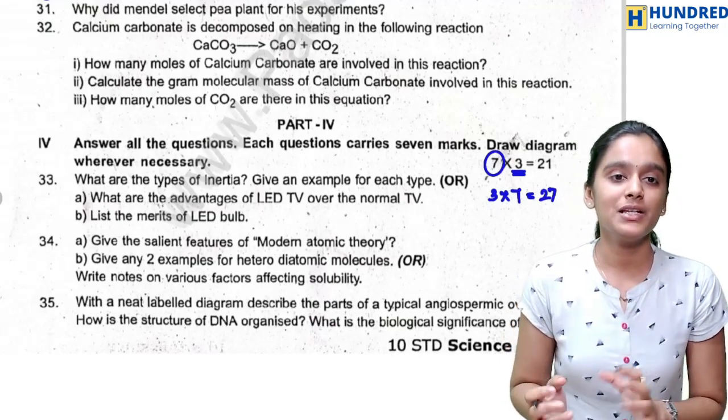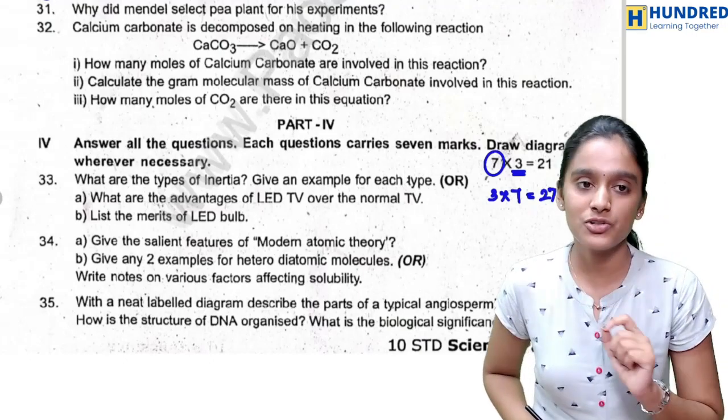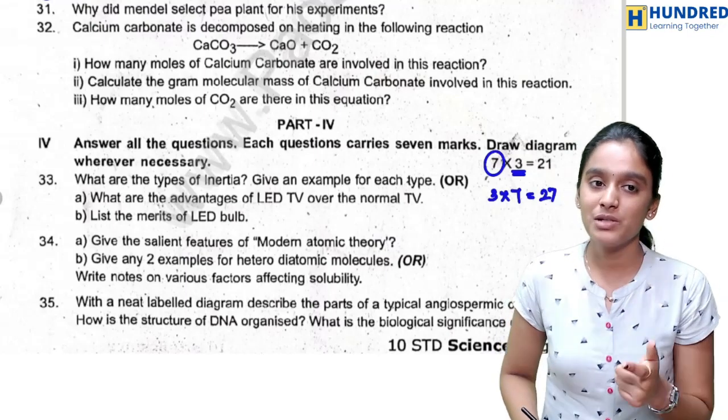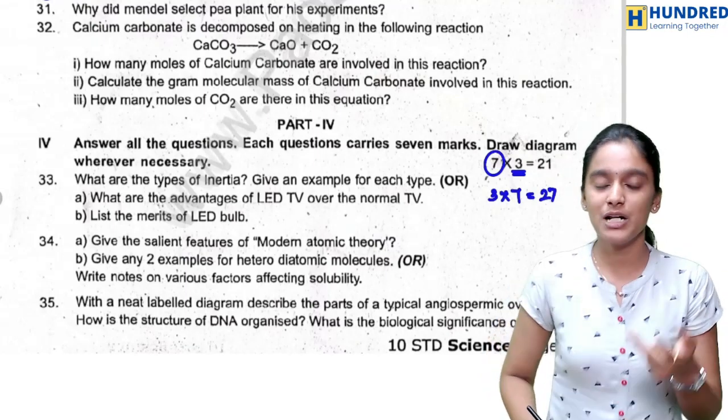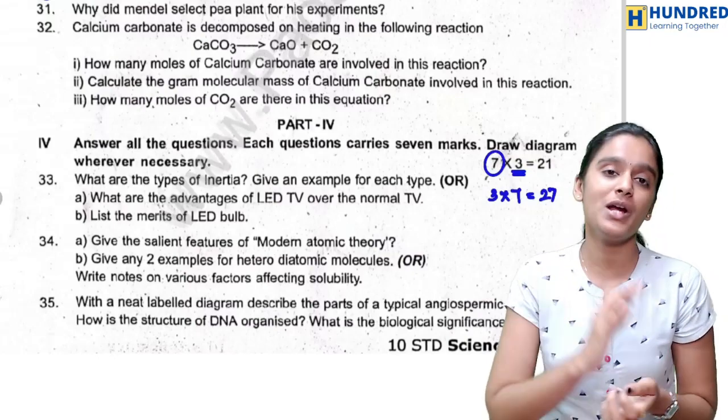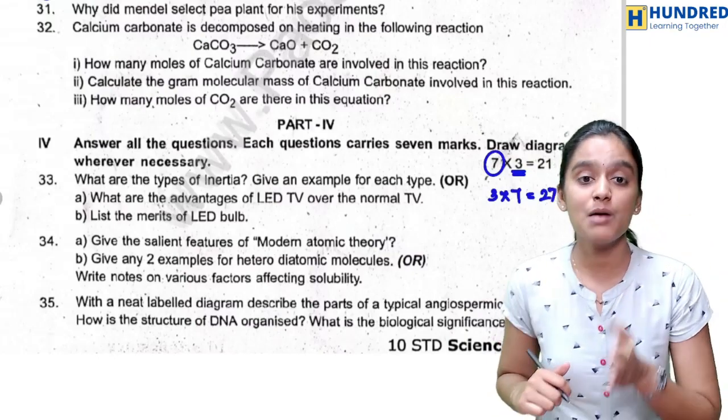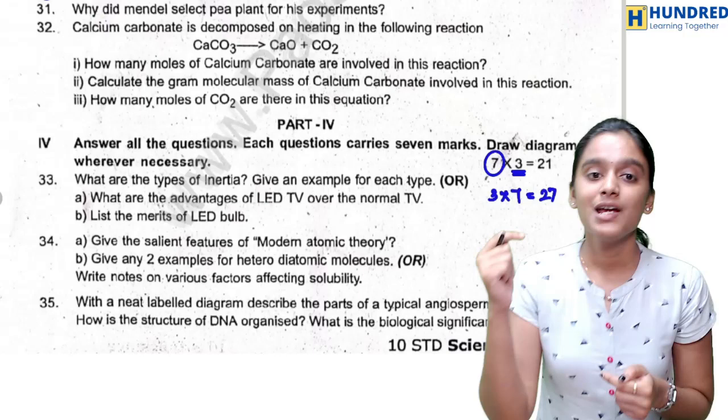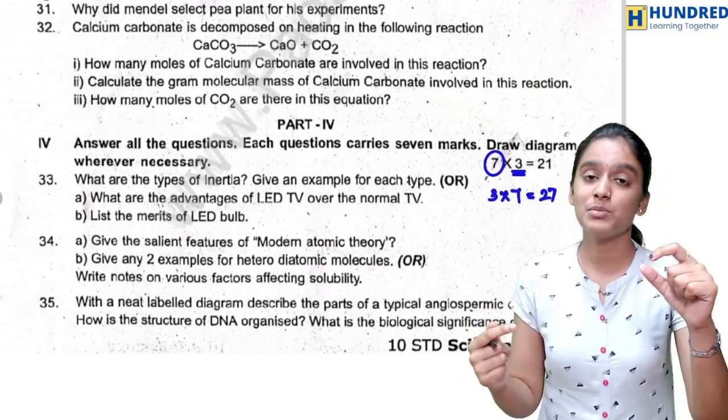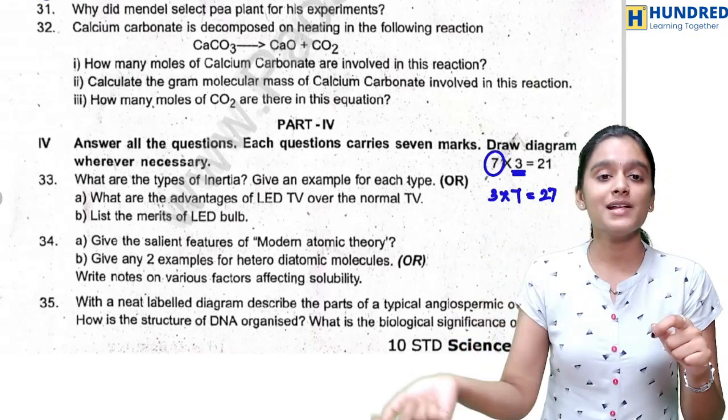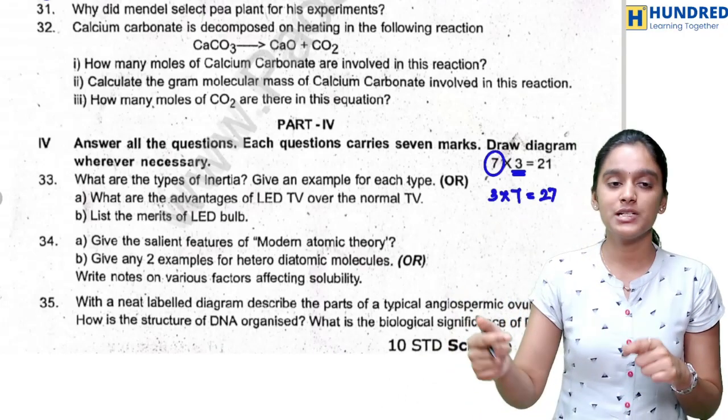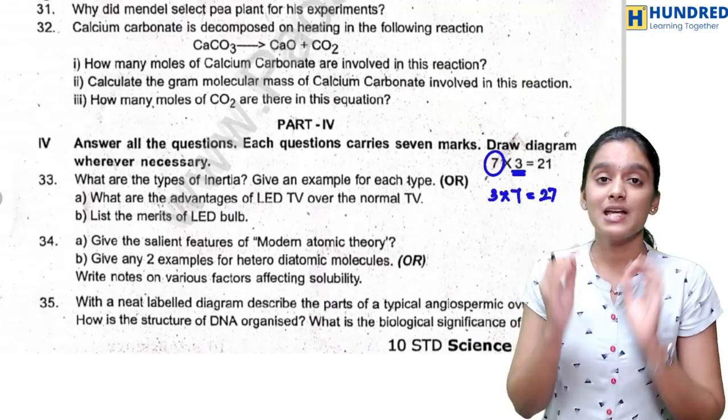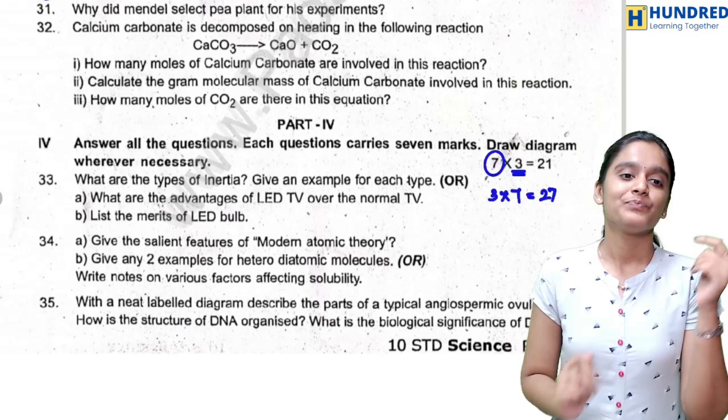Here you have to look at types of inertia, give an example for each type. Either you can attend this or advantages of LED TV over normal TV, one of the subdivisions, and write the merits of LED bulb. Next chemistry: in terms of modern atomic theory, and next subdivision give any two examples for hetero diatomic molecules. You can attend these two subdivisions, or else you can go with the various factors affecting solubility. You have to have different subdivisions and book back questions. You have to attend all of them.